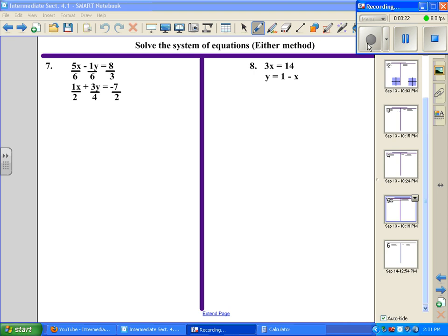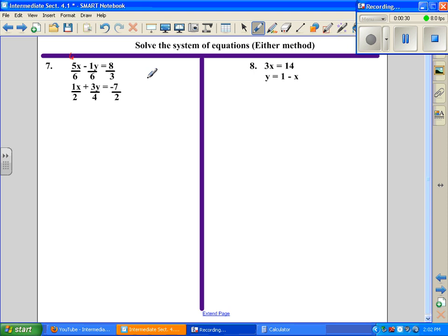The first thing is to multiply equation 1 through by the least common denominator. The least common denominator for equation 1 is 6. If I multiply everything in equation 1 by 6, now I want to simplify. 6 divided by 6 gives 1, 6 divided by 2 gives 3, so 1 times 5x is 5x.